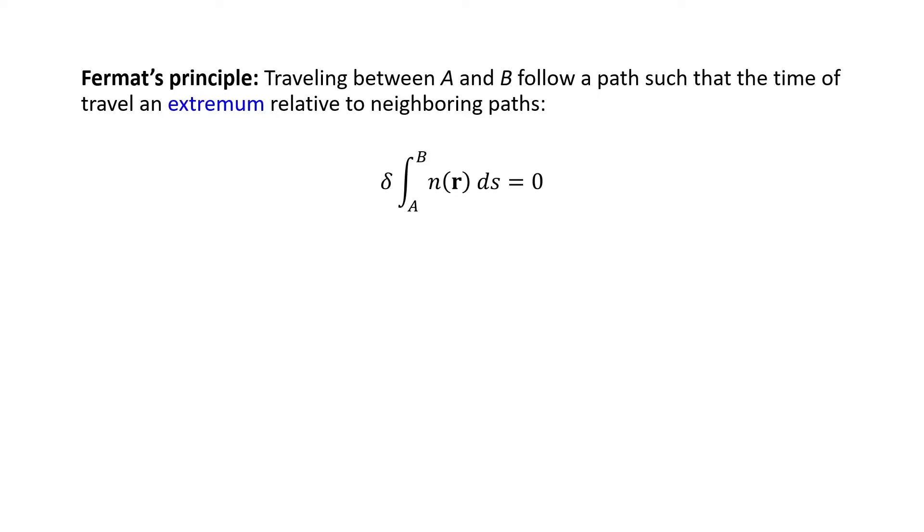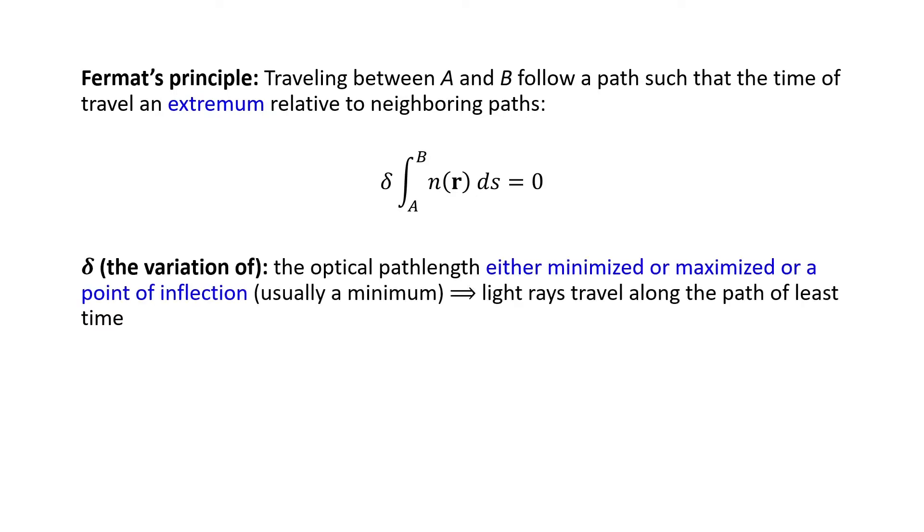The mathematical form of that is this integral, delta integral from a to b n(r) ds equals 0. Here we call delta the variation of, and it says that the optical path length is either minimized or maximized or a point of inflection, but it is usually a minimum.